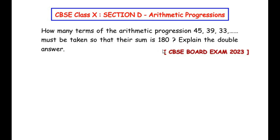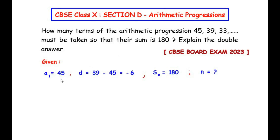To begin, let us write down the data given in the question. Here a1 represents the first term of the sequence, which is 45. d represents the common difference, that is the second term minus the first term: 39 minus 45 gives us negative 6. The sum of n terms is given as 180, so Sn = 180, and n is the number of terms in the sequence which we need to find.